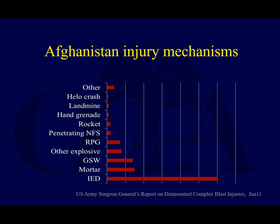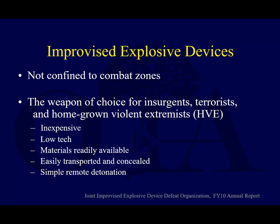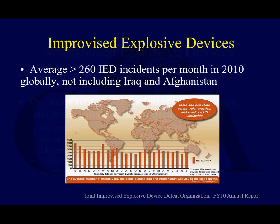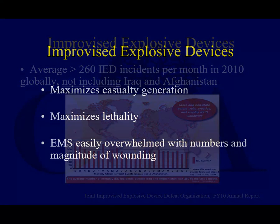In Afghanistan, IEDs clearly lead the list of injury sources from 2009 to 2011. Unfortunately, IEDs are not confined to combat zones — they are the weapon of choice for insurgents, terrorists, and other violent extremists. They're inexpensive, low-tech, and their materials are readily available. They can be easily transported, concealed, and detonated remotely. There were an average of over 260 IED incidents per month globally in 2010, not including Iraq and Afghanistan.